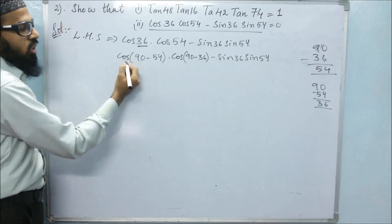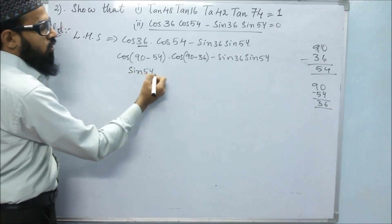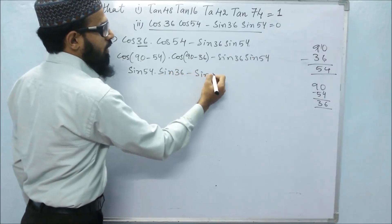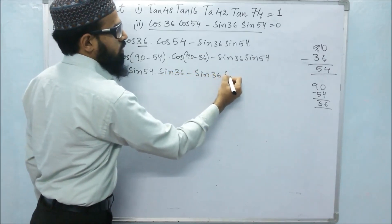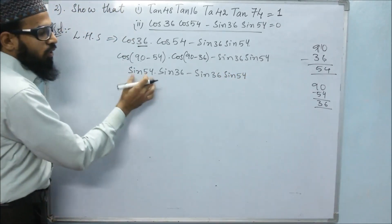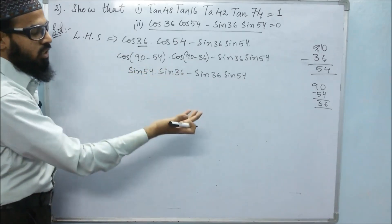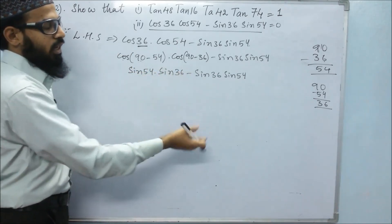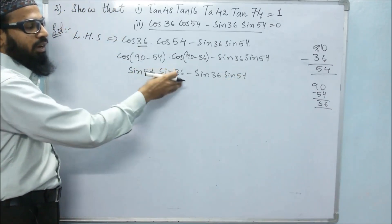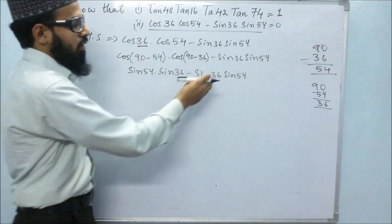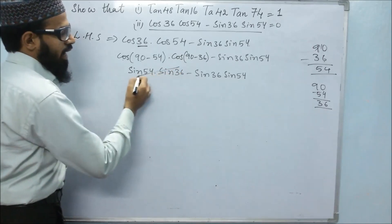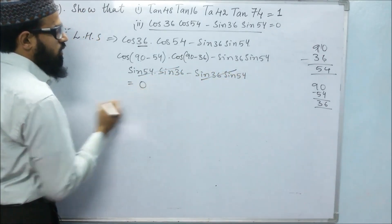On 90 degrees, cos changes to sin. So cos(90 - 54) = sin54, and cos(90 - 36) = sin36. This gives us sin54 × sin36 minus sin36 × sin54. Since sin54 × sin36 and sin36 × sin54 are the same product, these both get cancelled and we get 0.